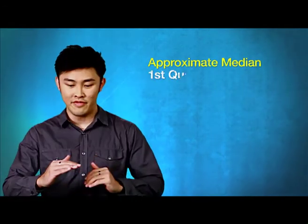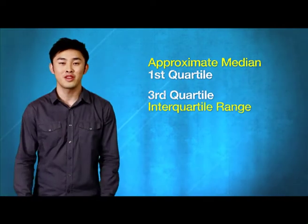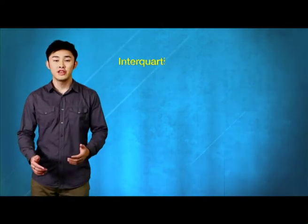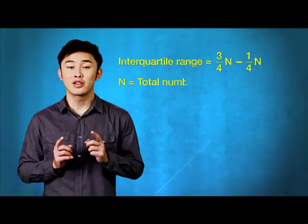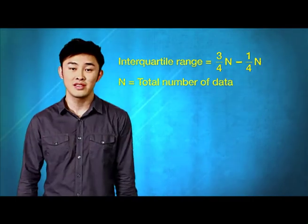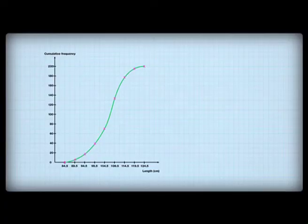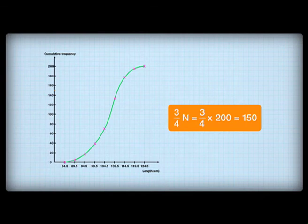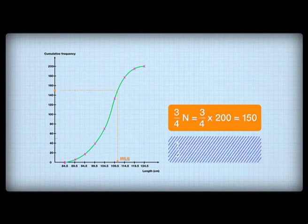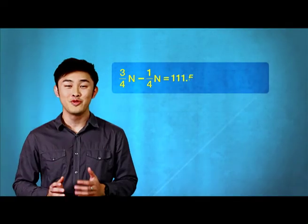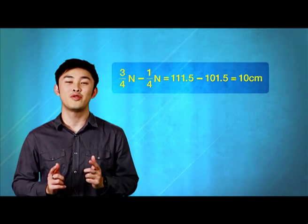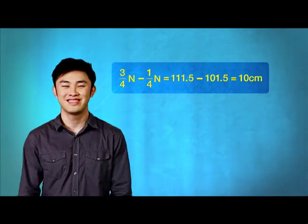Using this ogive, we can find the approximate median, the first and the third quartile, and therefore the interquartile range. The interquartile range is Q3 (¾n) minus Q1 (¼n), where n is the total number of data, which in this case is 200. To find the interquartile range, we find the corresponding data to the third quartile, then the first quartile. Subtracting these two values gives you the interquartile range of 10 cm.